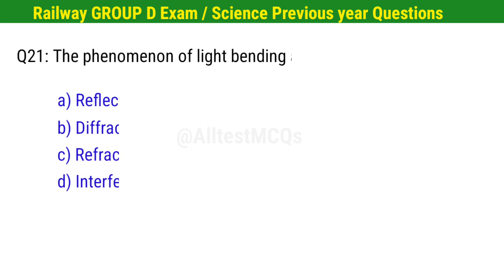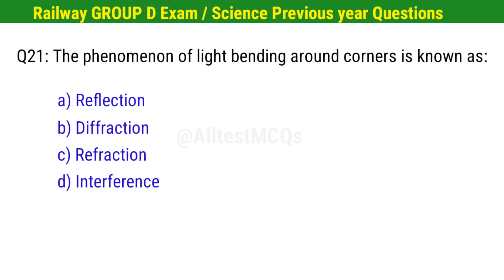Question No. 21. The phenomenon of light bending around corners is known as? Right option is B. Diffraction.